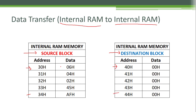The data present in the source block is stored at those address locations. Once we execute the program, all these values present at these memory locations should be copied to the destination address locations. Right now the destination address locations all have the value 00H, and these 00H values will be replaced by the values from the source block. That is the expected outcome of this experiment.